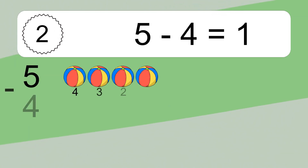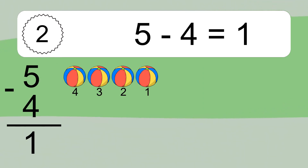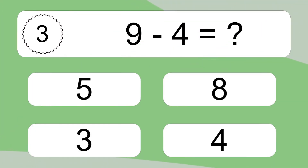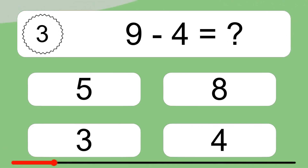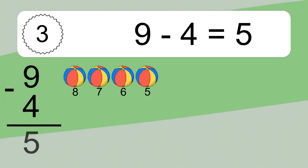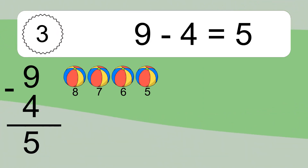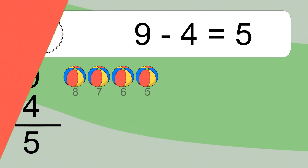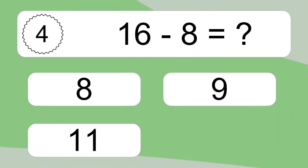Five minus four equals what? Five minus four equals one. Let's count it: four, three, two, one. Nine minus four equals what? Nine minus four equals five. Let's count it: eight, seven, six, five.